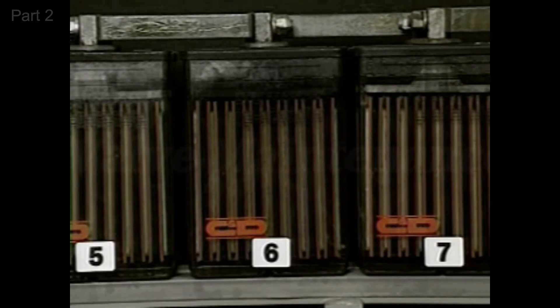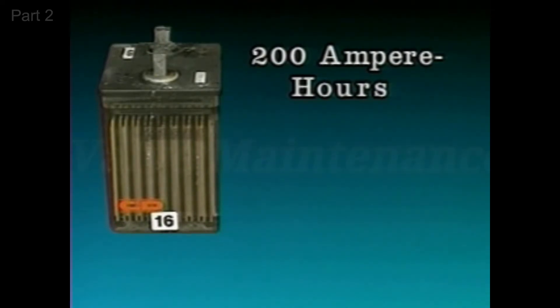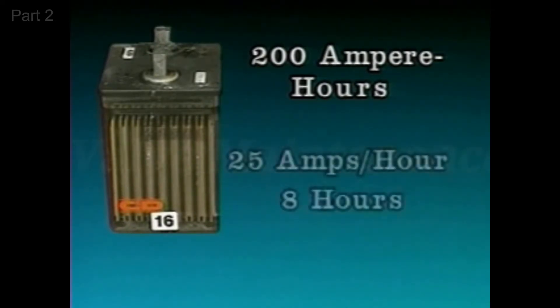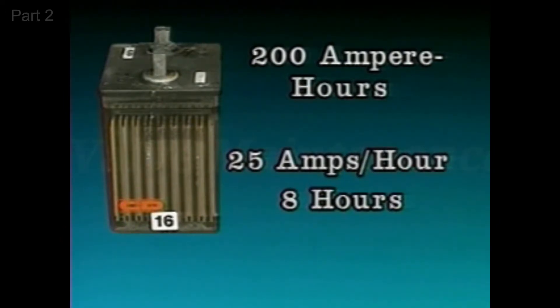Manufacturers typically rate cells based on an 8-hour rate of discharge. For example, this cell is rated at 200 ampere hours. This means it should be able to supply 25 amps of current per hour continuously for 8 hours, for a total of 200 ampere hours.